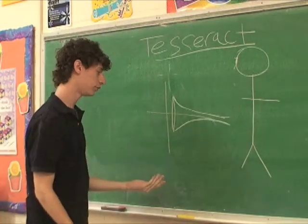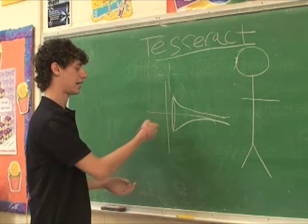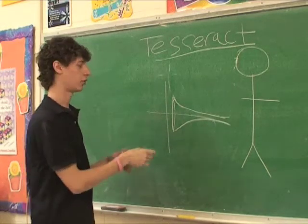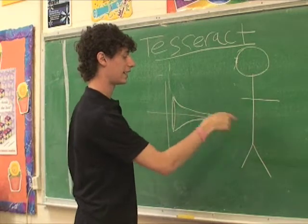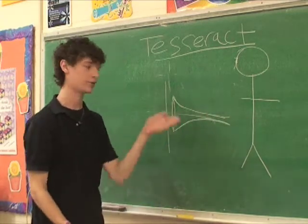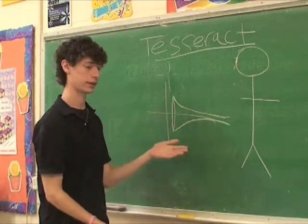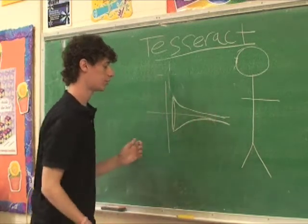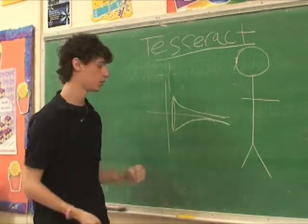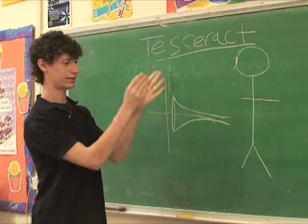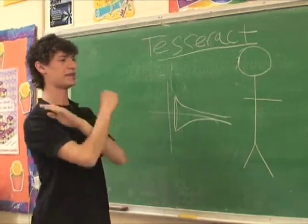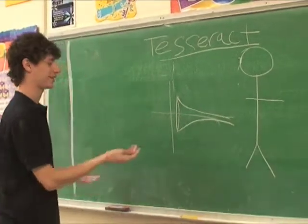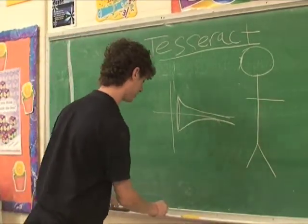What mathematicians have been able to prove is that Gabriel's Horn has a finite volume. Although its length is infinite and therefore the surface area around it is infinite, it has a finite volume. That means you could take a finite amount of paint, pour it into this trumpet, let it seep through the edges, and paint an infinite amount of space with a finite amount of paint. We can't actually physically create such a thing, though.